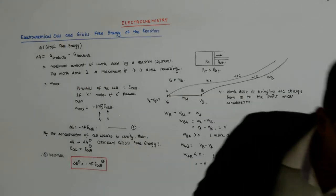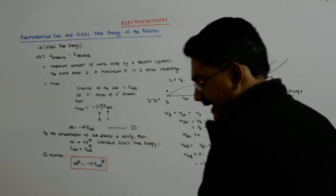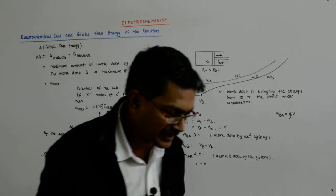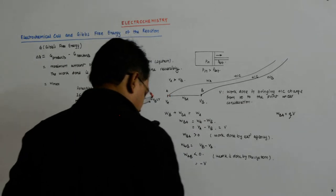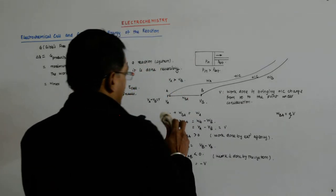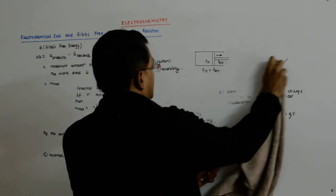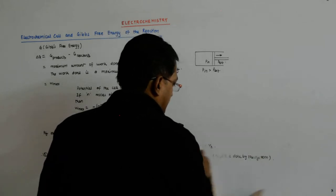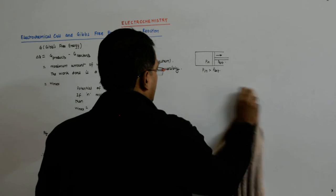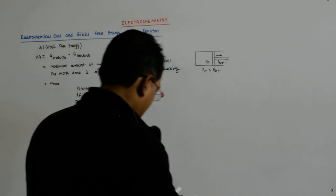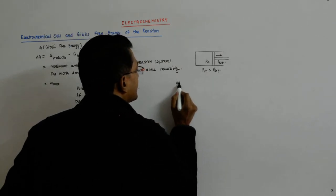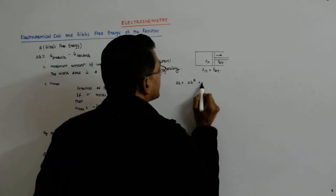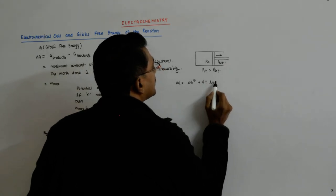Now we come to the thermodynamic definition of ΔG, and we see that it is defined as: ΔG is equal to ΔG naught — the standard Gibbs value — plus RT log Q.